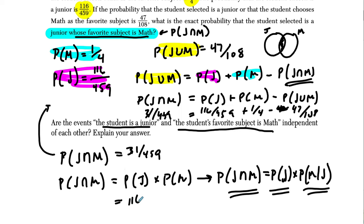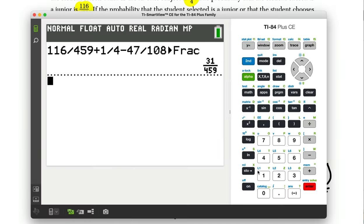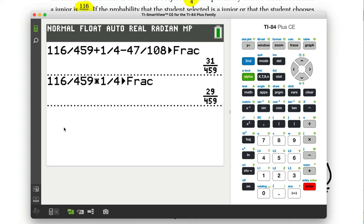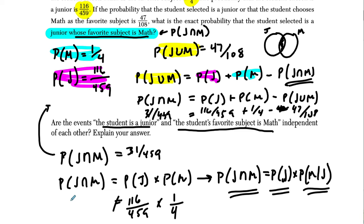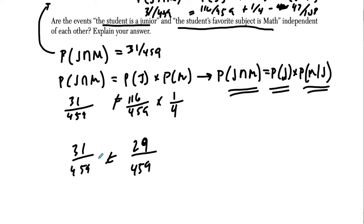So let's try that out. We've got 116 out of 459 — the probability of being a junior — times the probability of liking math as your favorite subject. Does that equal 31 out of 459? You can see it does not. Testing it out: 116 over 459 times 1 over 4, using math and fraction, gives us the reduced fraction 29 over 459. So 29 over 459 is not equal to 31 over 459 — that is not the same thing. In other words, you can't just multiply them; being a junior has some impact on whether or not math is your favorite subject.